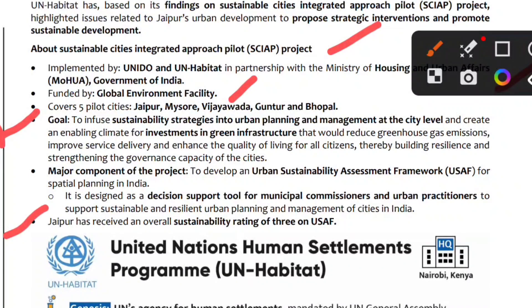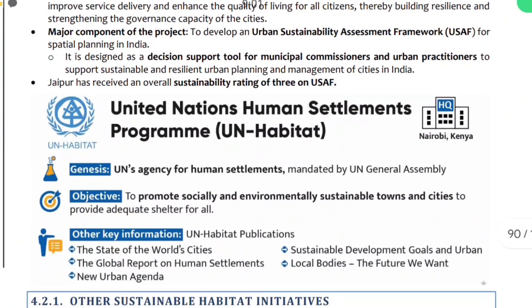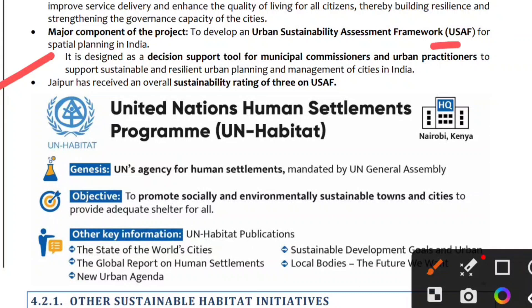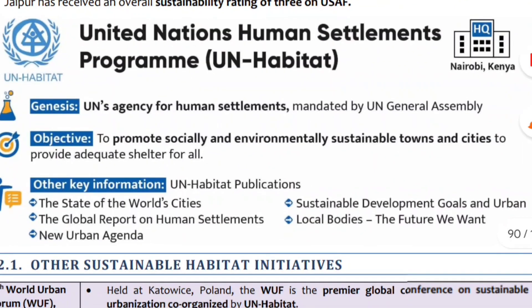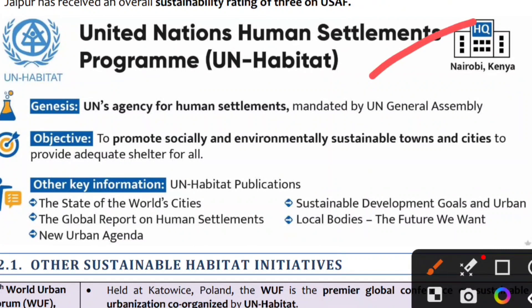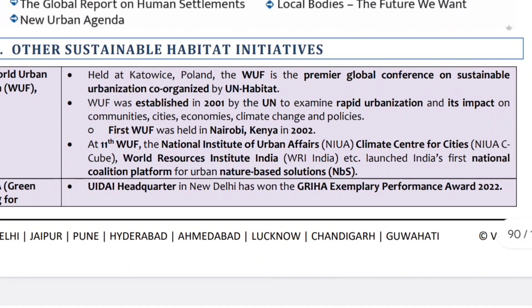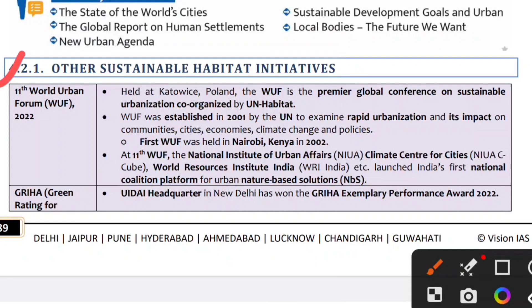Jaipur has a sustainable rating overall. In Jaipur, the USAF has a 3rd rank. UN Habitat — the United Nations Human Settlement Programme — is mandated by the United Nations General Assembly for social and environmental sustainable towns and cities. UN Habitat publishes the State of World Cities Global Report of Human Settlement, the New Urban Agenda, SDGs, and the Urban Local Bodies framework. The 11th Urban Forum is WUF.